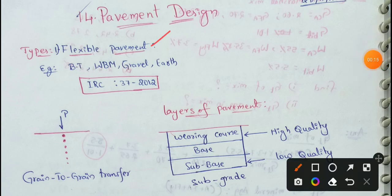First, flexible pavements. So this is flexible pavements example. Flexible pavements design is based on IRC 37-2012. I will use this code as flexible pavements design.